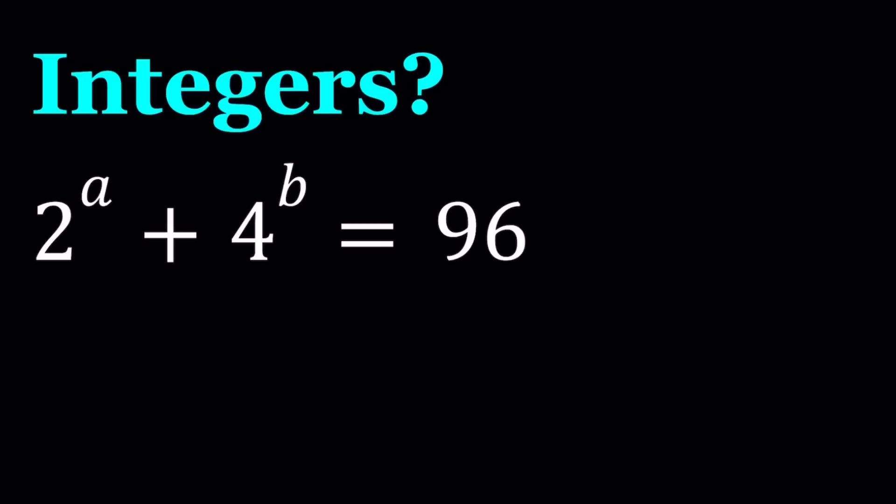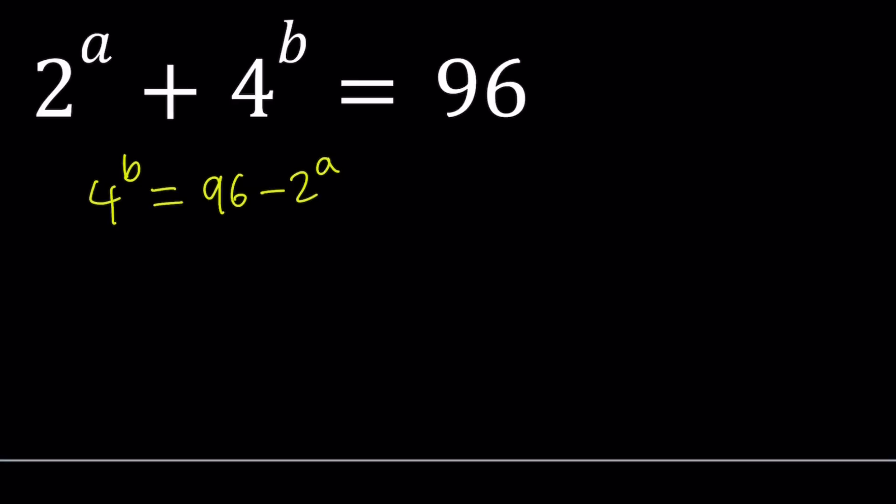Now what happens if a and b are real numbers? Then we're going to have infinitely many solutions. So let's take a look at it from that perspective first. Isolate 4 to the power b, and then log both sides with base 4, so you can bring the b down and get a 1. So log with base 4, 4 to the b, and then with the same base, 96 minus 2 to the power a.